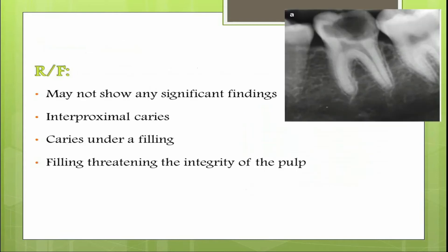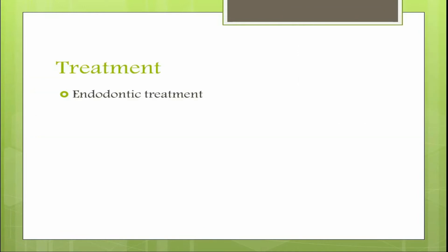On radiograph, a large radiolucency involving the entire enamel and dentine involving the pulp is seen. Interproximal caries, decay under a filling, or a filling threatening pulp integrity may also be appreciated radiographically. Importantly, there will be no periapical changes — the periapical area appears completely normal. Management of irreversible pulpitis is root canal treatment, as the pulp cannot return to a normal state even if the stimulus is removed.